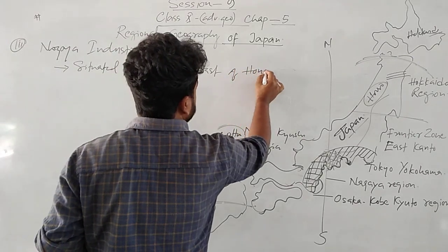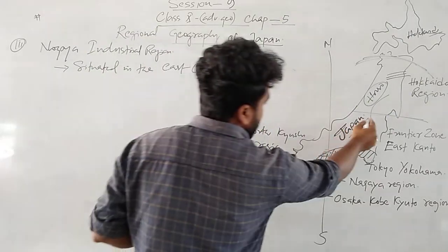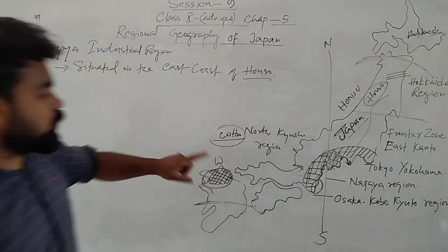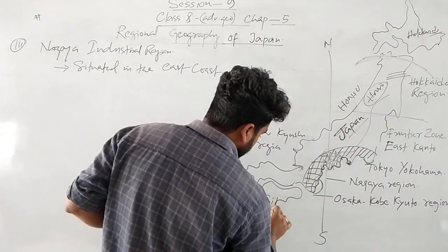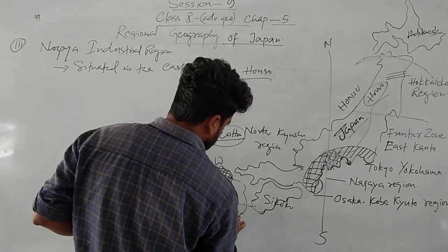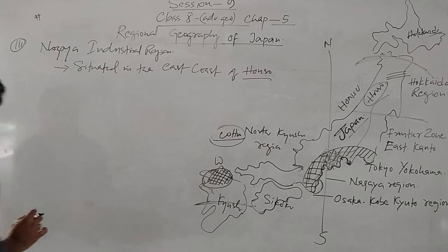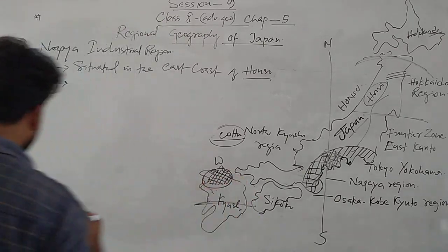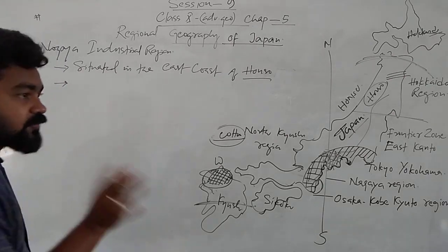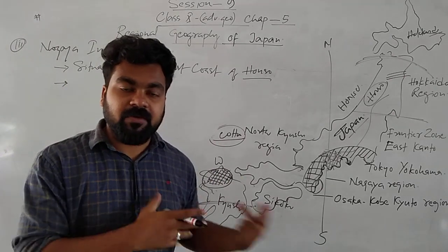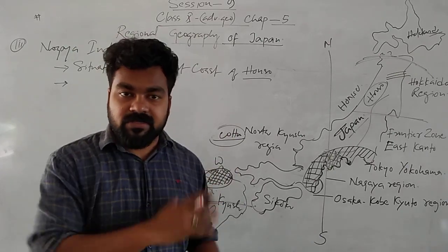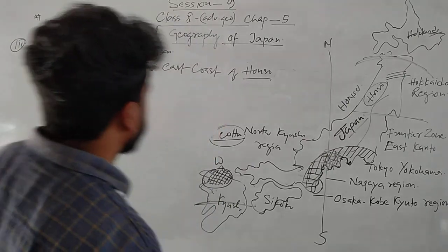The Nagoya region is known as the cotton hub of Japan. Most importantly, it is also called the Detroit of Japan, because its manufacturing quality and economic activities are similar to Detroit. So, it is a major center of textile production, including cotton and silk.